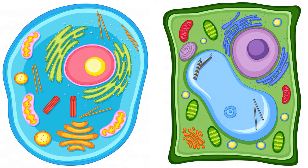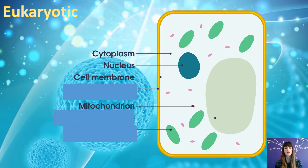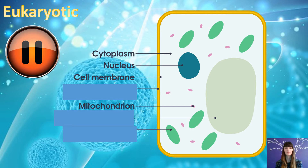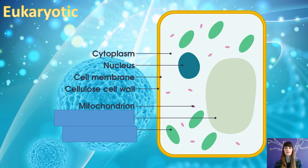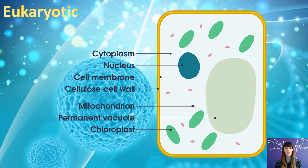So that's an animal cell. We're going to look at our second type of eukaryotic cell, which is a plant cell. It's the same thing as before — I want you to pause the video, draw this cell, and add the three new labels for me. So our first label is a cell wall. The next label is a vacuole, and the final one is chloroplasts.